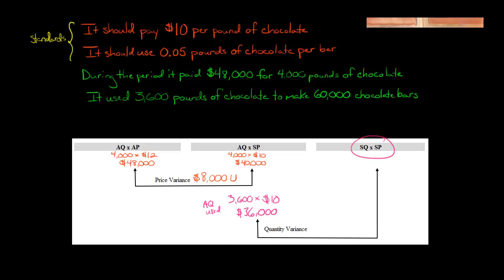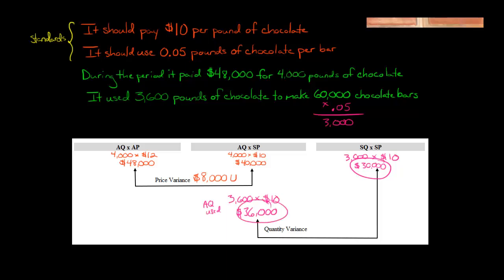To get standard quantity times standard price, we say: we made 60,000 chocolate bars and it was supposed to take 0.05 pounds per bar. Multiplying 0.05 times 60,000 gives us 3,000 pounds — that's our standard quantity. So 3,000 times the standard price of $10 gives us $30,000 — that's our SQ times SP. Now we compare the $30,000 to the $36,000.